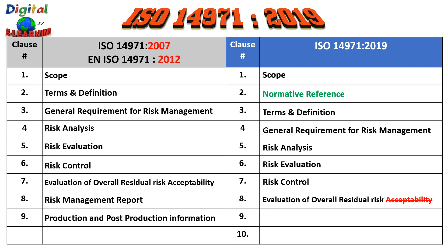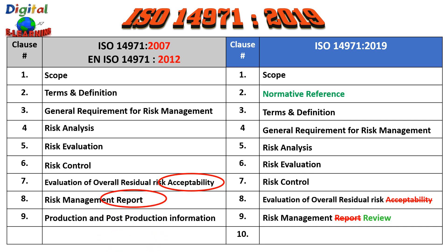The word 'acceptability' has been removed from the evaluation of overall residual risk clause. Next is 'risk management review,' not 'report' as in the previous revision. Finally, it is 'production and post-production activities' — the word 'information' has been removed. While these may not seem significant, they will enforce companies to renumber many documents such as training materials, quality procedures, audit checklists, questionnaires, and templates.